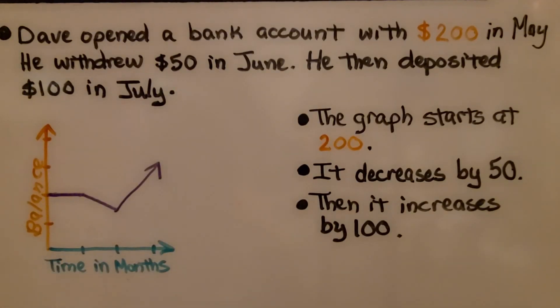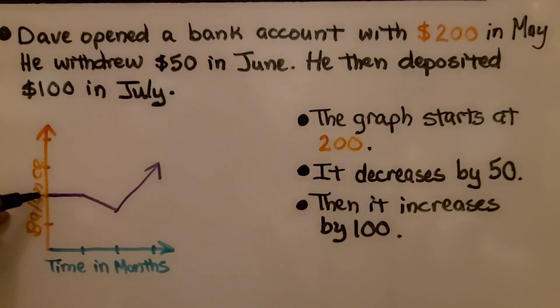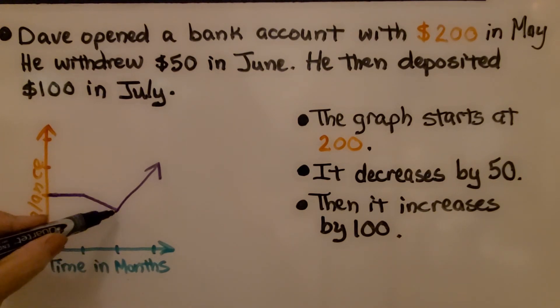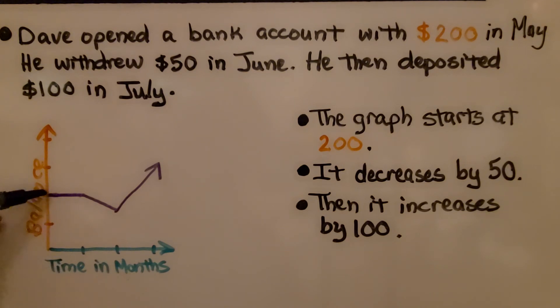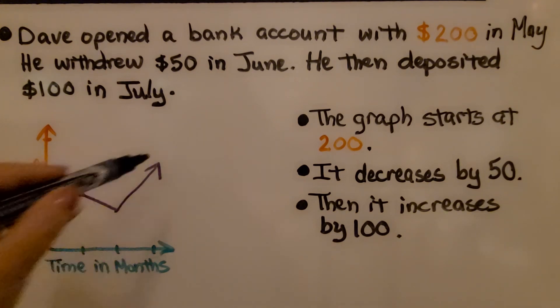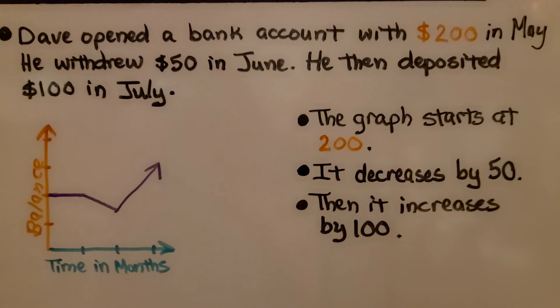Here's our last one. Dave opened a bank account with $200 in May. He withdrew $50 in June, then deposited $100 in July. The graph is going to start at $200 where he opened his account. Then it's going to decrease by $50, then increase and go up by $100.